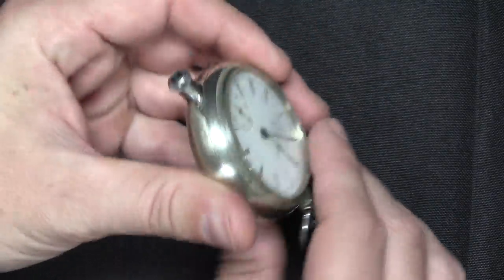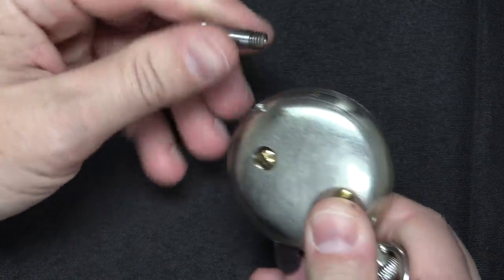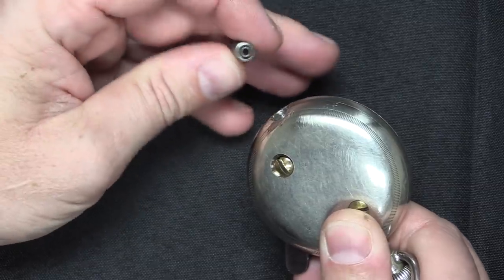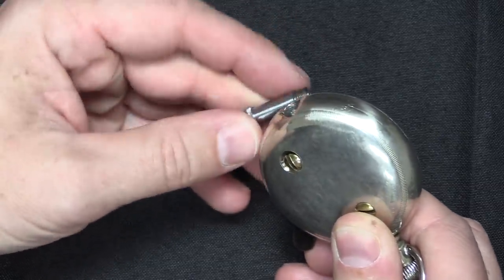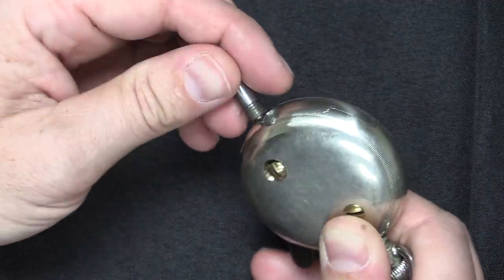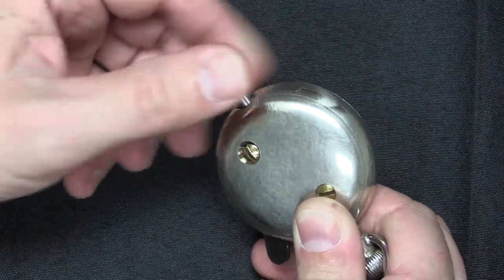So we have a barrel down here that threads off, and that is sized to hold a 4.5mm BB and a No. 11 percussion cap on the back. So you actually have to take the barrel out, you press a BB into it, set a cap on it, and then you thread the barrel back into the interior of the watch.